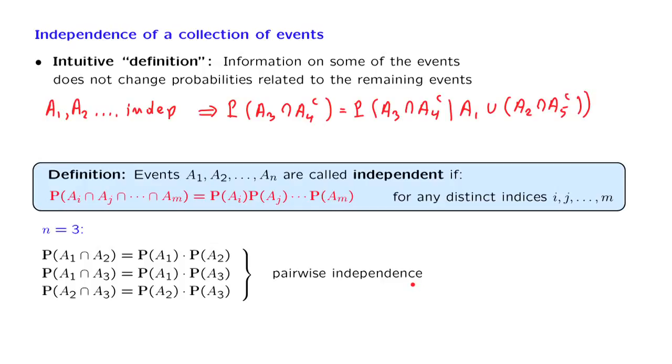But the definition requires something more. It requires that the probability of three-way intersections can also be calculated the same way, by multiplying individual probabilities. And this additional condition does make a difference, as we are going to see in a later example.